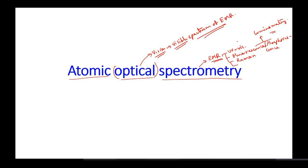If you consider the methods we have discussed, we can majorly break down spectroscopic techniques into two ways. The first one is absorption spectroscopy.